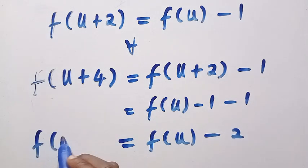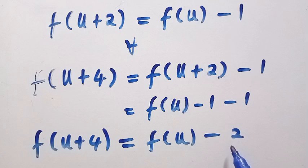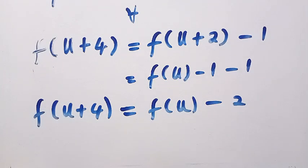For every f(u+4), it gives us f(u) minus 2, and the first one, f(u+2), it gives us f(u) minus 1.